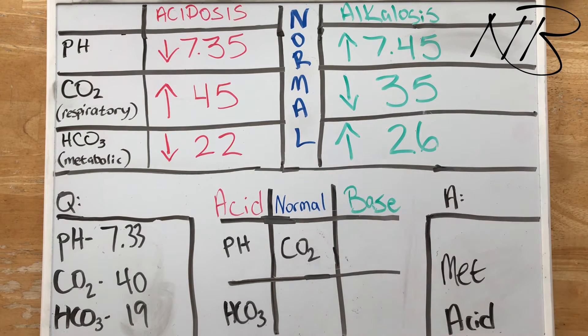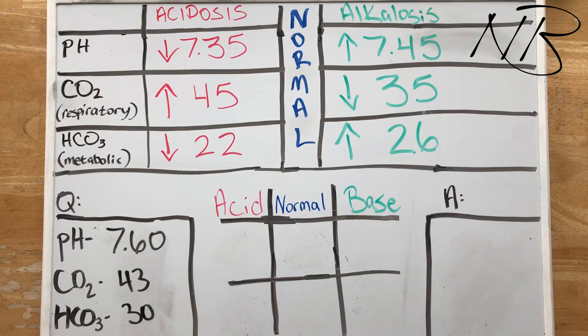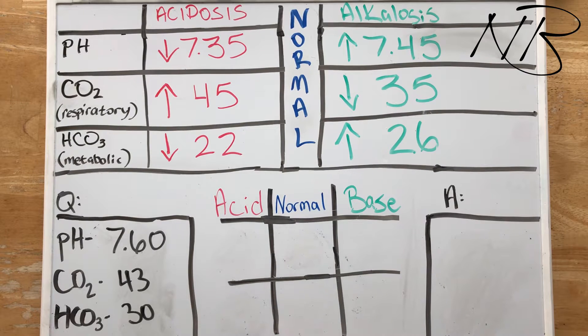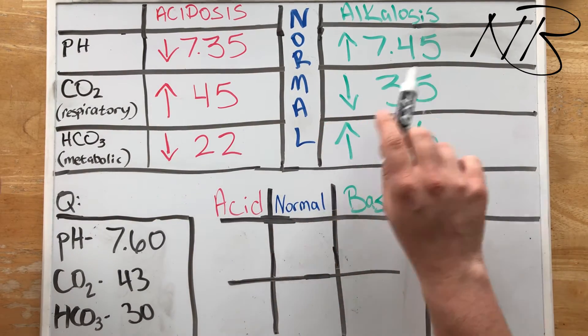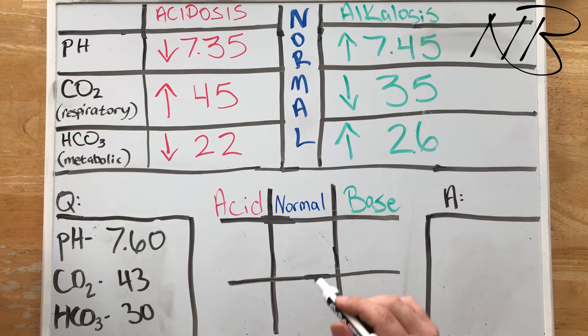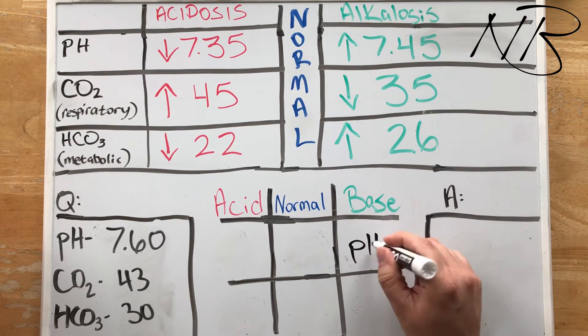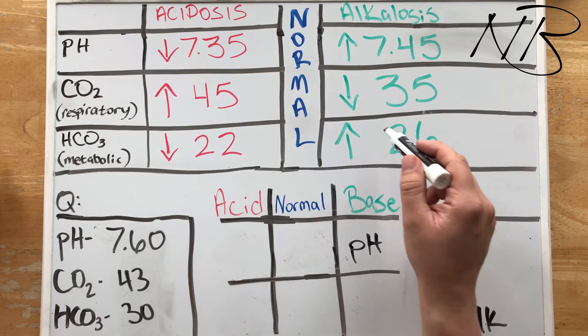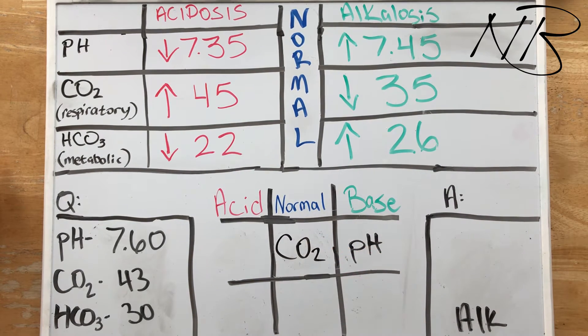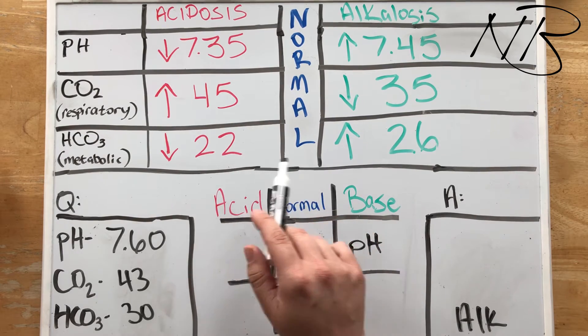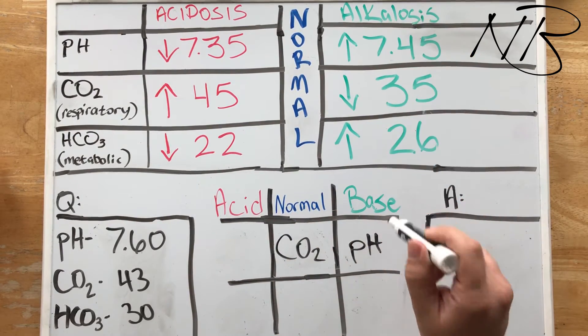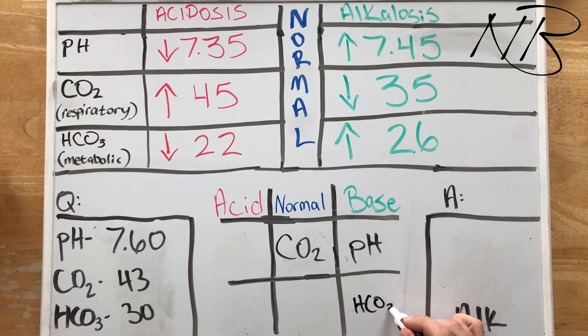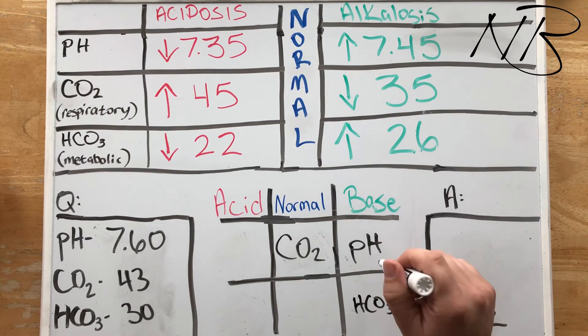For this fourth one guys we have a pH of 7.6, CO2 of 43, and a bicarbonate of 30. First thing is the pH, 7.6, that's well above 7.45, so we know immediately it's going to be in the basic or the alkalotic column. CO2 of 43, 43 is in between 35 and 45, so that's going to fall in the normal category. And then our bicarbonate is 30, which is above 26, so that is also going to fall in our alkalosis column.